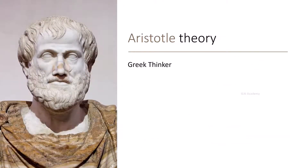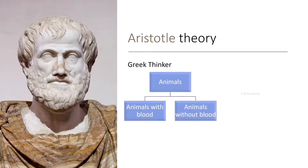Aristotle was a great thinker and philosopher. The classification system was originally proposed by him. He classified living things into two groups according to their similarities: animals with blood and animals without blood.